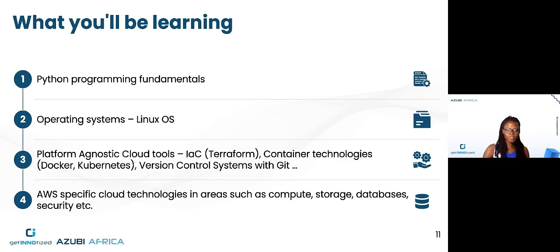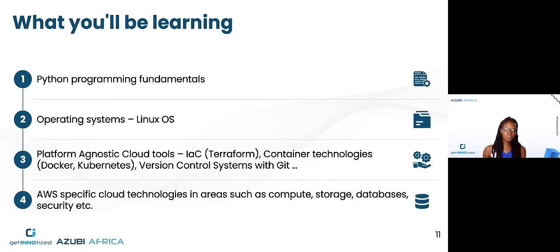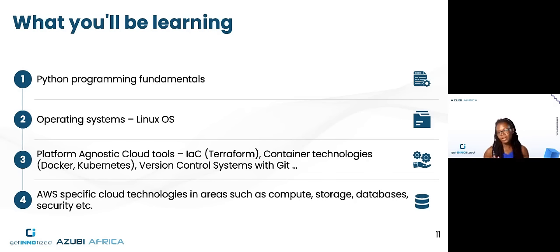The fourth one we also put here is the AWS-specific services that are available. So once you've learned about cloud as a whole and things available in the cloud, we are going to look at specific services and their use cases in areas such as databases, security, storage, and a lot of other areas.